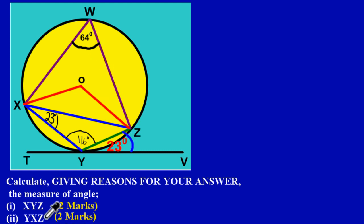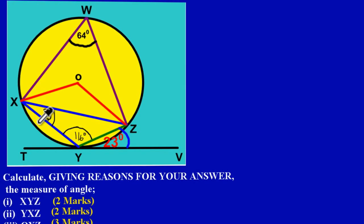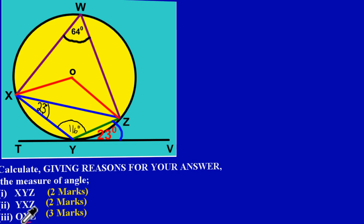We also solved Part 2: angle YXZ, which we found to be 23 degrees. The theorem used was the alternate segment theorem — the angle outside equals the angle inside the alternate segment. If you're unsure, go back to the previous video in the playlist.